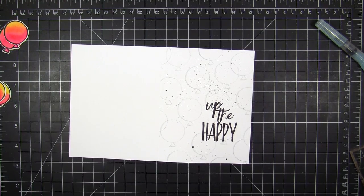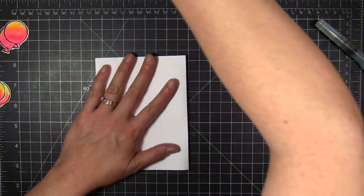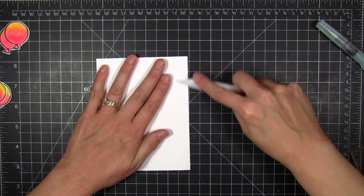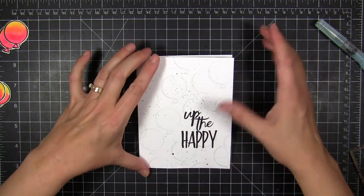The nice thing about the Distress paint is that if you did get water on top of it, or you wanted to color over the top of it, it is fixed. So it is not going to move or blend out or bleed out if you wanted to color over the top of it.